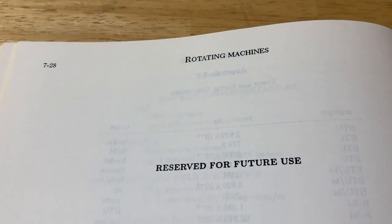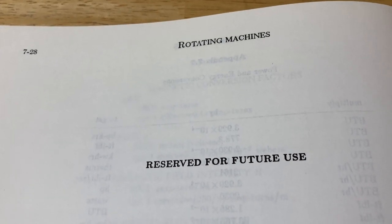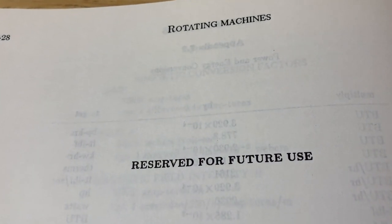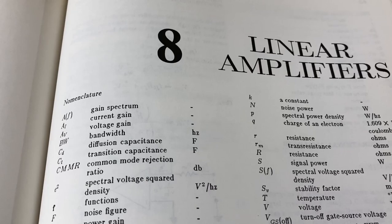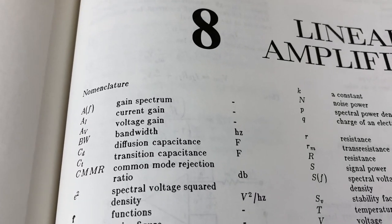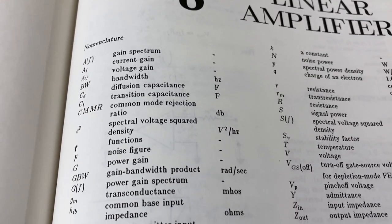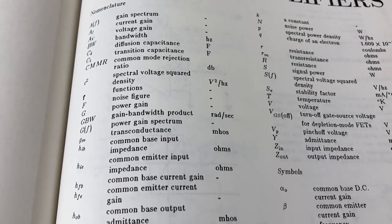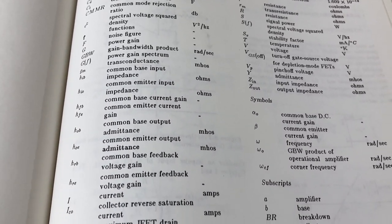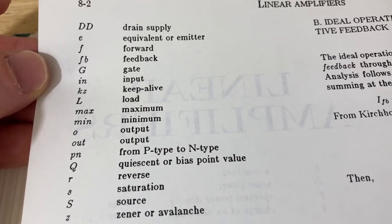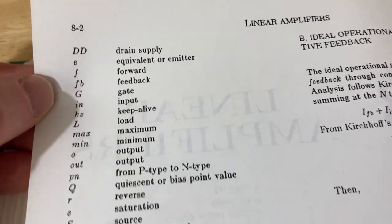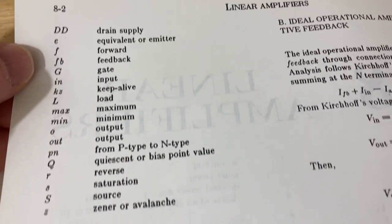Yet another one of those mysterious pages: rotating machines reserved for future use. This is on the chapter on linear amplifiers. Look at the nomenclature. All kinds of variables. So much stuff. And this is just one chapter. DD, drain supply.